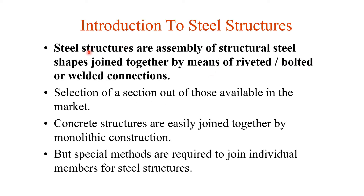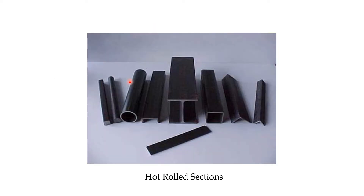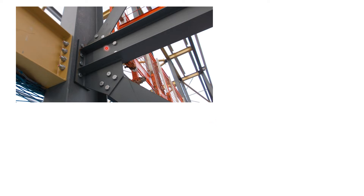Steel structures are assemblies of structural steel shapes joined together by means of riveted, bolted, or welded connections. Here you can see examples: the I-section, hollow rectangular section, angle section, channel section, hollow pipe section, solid circular bar, and rectangular bar section. There is also a steel stirrup and here is a bolted connection where you can see the bolts — nuts and bolts.